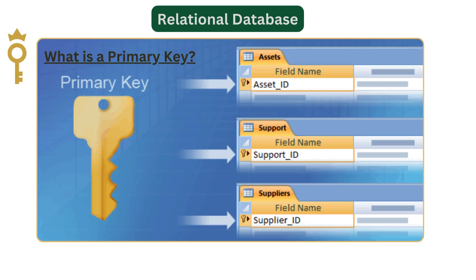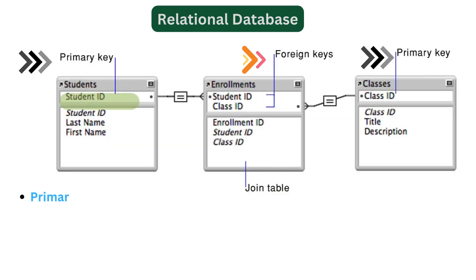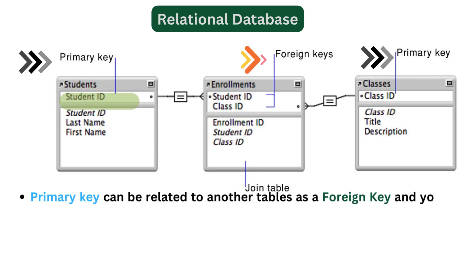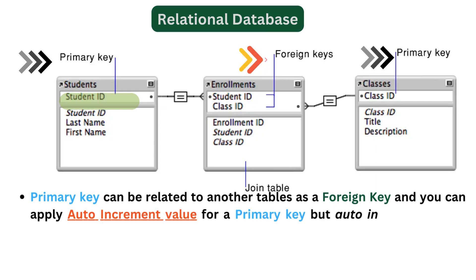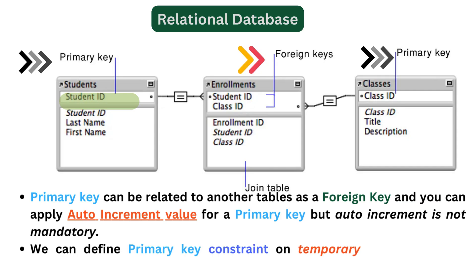Regarding the primary key: a table can have only one primary key, which cannot have a null value. It always represents a clustered index in a database table and helps to organize the sequence of the clustered index. A primary key can be related to another table as a foreign key, and you can apply an auto-increment value for a primary key, but auto-increment is not mandatory. We can define a primary key constraint on a temporary table and table variable.